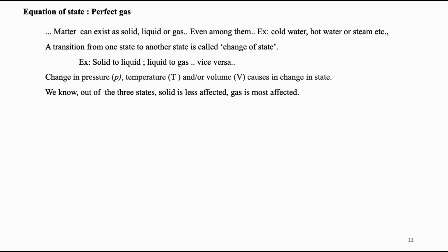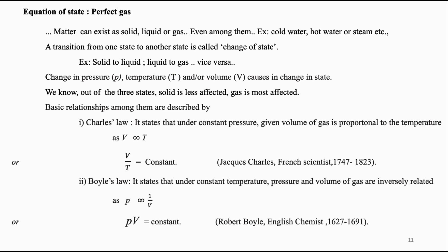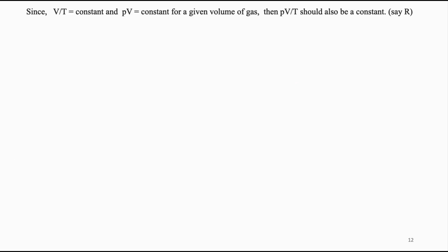Let us shift our discussion towards gases. Two basic laws govern the relationship among different states of gases. Charles' law states that under constant pressure, volume of the gas and its temperature are proportional: V ∝ T, or V/T = constant. Boyle's law states that at constant temperature, volume and pressure are inversely related: PV = constant. Since V/T is constant and PV is also constant, combining these two gives PV/T = constant, say R.